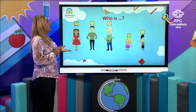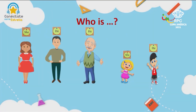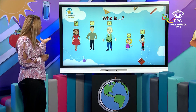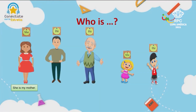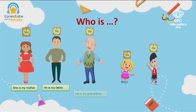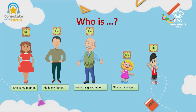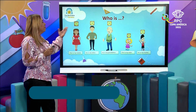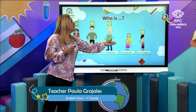Now let's review about the pronouns. Who is she? Who is he? Remember, we use "she" for female and "he" for male. Who is she? She is my mother. Who is he? He is my father. And who is he? He is my grandfather. Who is she? She is my sister. And at the end, who is he? He is my brother. So: mother, father, grandfather, sister, and brother.